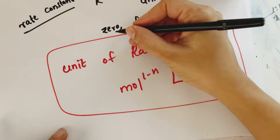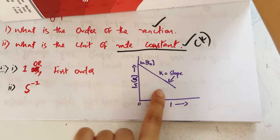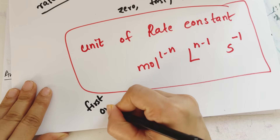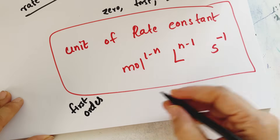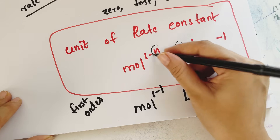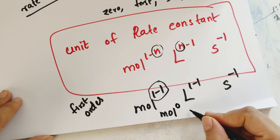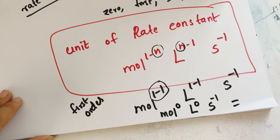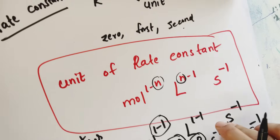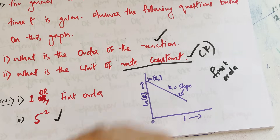For order 0, unit maps to mol L⁻¹ s⁻¹. For order 1 (n=1), the unit is L⁰ mol⁰ s⁻¹, which simplifies to s⁻¹. First order rate constant unit is s⁻¹.